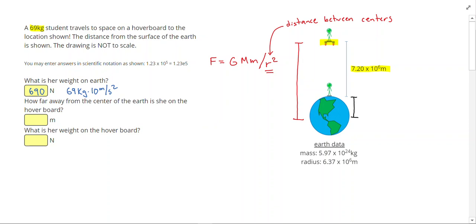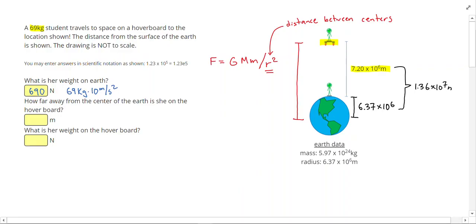That distance is just the radius of the Earth: 6.37 times 10 to the 6th meters. So if I add those two together, I get 1.36 times 10 to the 7th meters. This value is going to go into our equation.